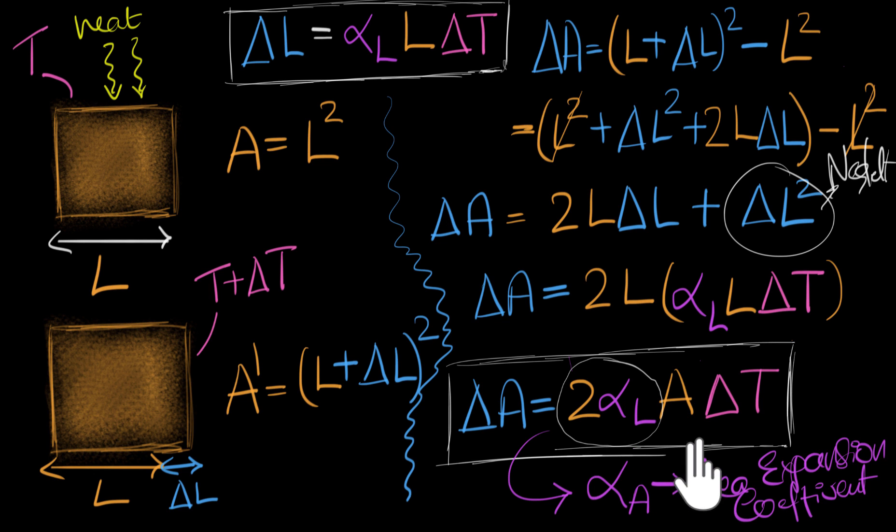Now you may wonder that we derived this expression and we got this result for a perfect square plate. But would it work for any other shapes? The answer is yes. And you can try and do it yourself for shapes like say a rectangle or a circular plate. Try them. It will be a great exercise. But it turns out that in general, if you take any shape, even 3D for that matter, and you calculate the changes in the area due to changes in temperature, you end up with the same expression, you end up with exactly the same result, as long as we're dealing with very tiny changes.